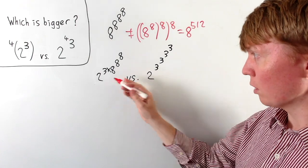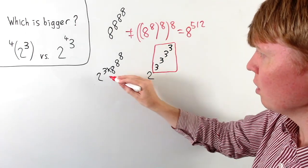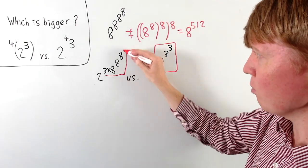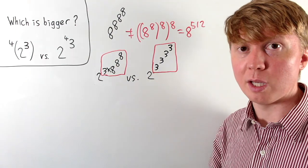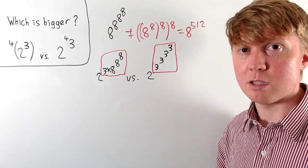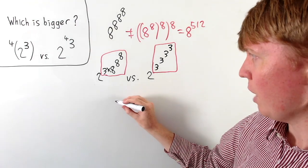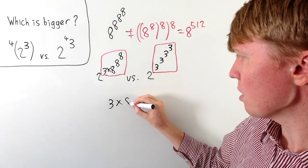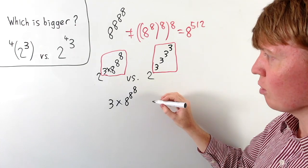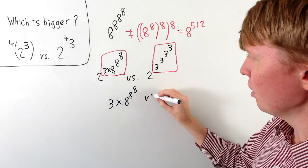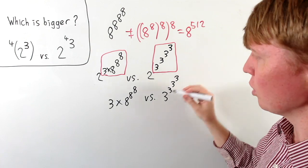At this point we're comparing 2 raised to different powers, so we can just compare the powers instead. Whichever power is biggest will give the biggest answer when we raise 2 to it. So we compare the slightly simpler 3 times the tetration of order 3 versus the tetration of order 4 of the number 3.